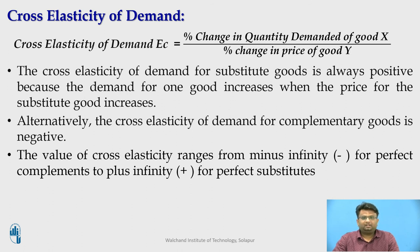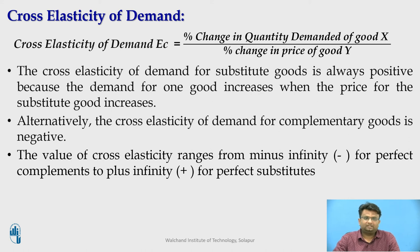Cross elasticity. The cross elasticity of demand is a numerical measure of the degree to which the quantity demanded for a good responds to a change in the price of other commodities, while other commodities' demand is kept constant. It means we are comparing two products. The cross elasticity of demand is an economic concept that measures the responsiveness of the quantity demanded for one good when the price for another good changes. The cross elasticity of demand for a substitute good is always positive, because the demand for one good increases when the price of the substitute good increases. Alternatively, the cross elasticity of demand for a complementary good is negative.